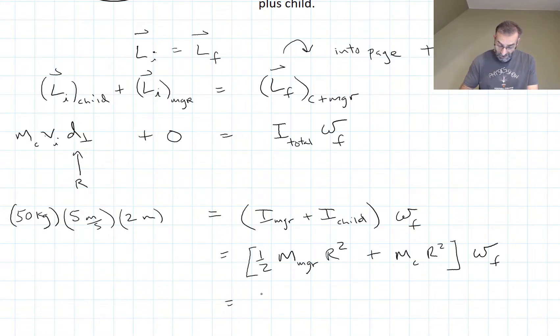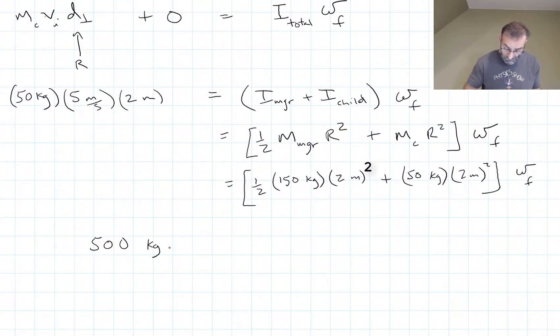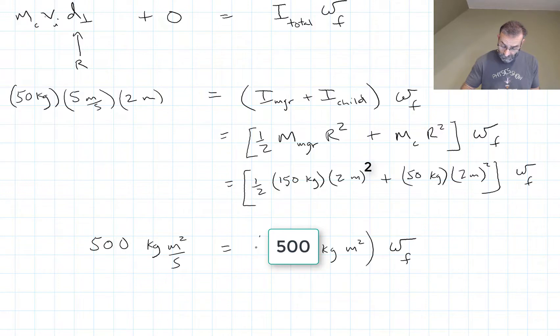And now we can plug in some numbers. I get a final rotational velocity of 1.0 radians per second.